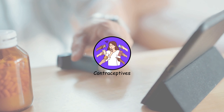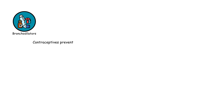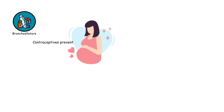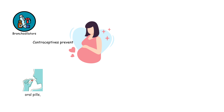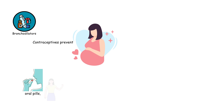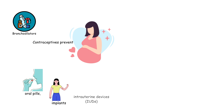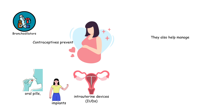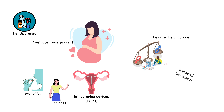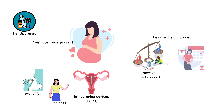Contraceptives prevent pregnancy. They include oral pills, implants, and intrauterine devices. They also help manage hormonal imbalances and menstrual disorders.